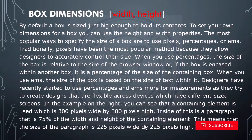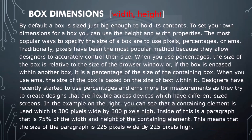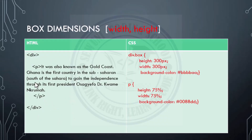I'm going to show you an example after this slide. We have a containing element that is 300 pixels wide by 300 pixels high. Inside of this is a paragraph that is 75% of the width and height of the containing element — so both width and height are 75%. This means the paragraph is 225 pixels wide by 225 pixels high.